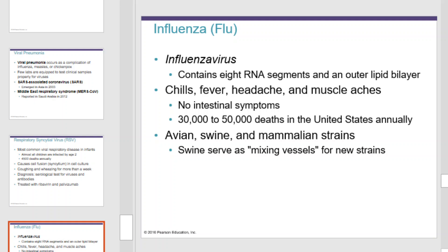Influenza, the flu, is caused by influenza virus, which contains eight RNA segments and an outer lipid bilayer. Symptoms include chills, fever, headache, and muscle aches, but normally do not include intestinal symptoms. 30,000 to 50,000 people die from influenza virus in the United States annually. Avian, swine, and mammalian strains of this virus also exist. Swine serve as mixing vessels for new strains.